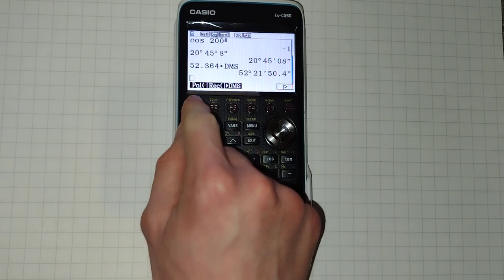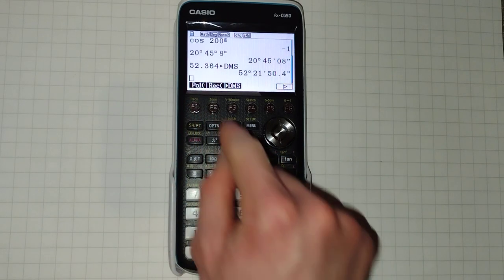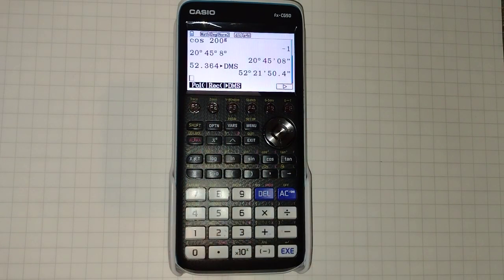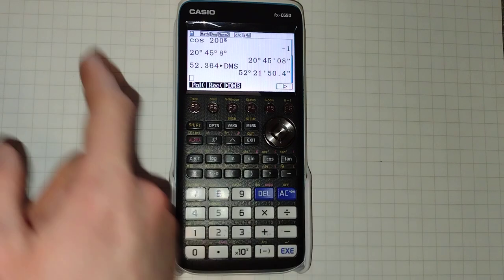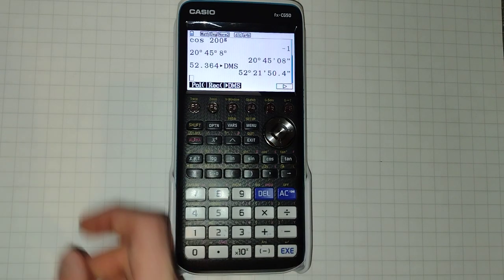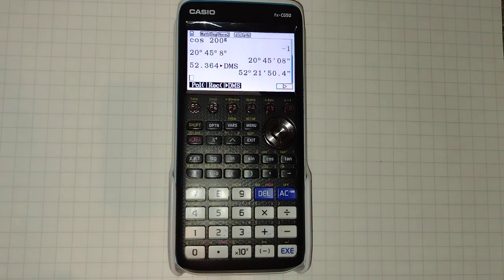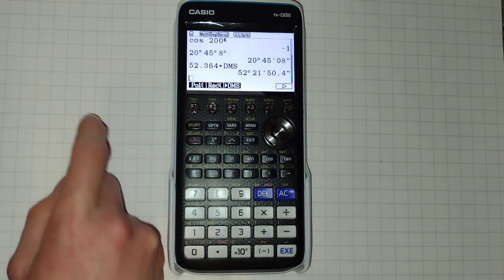There are also here these functions, Pol and Rec. Now these are used for converting in and out of, or between, rectangular coordinates and polar coordinates. So rectangular coordinates are X comma Y, whereas polar have the modulus, the distance from the origin, and an angle.